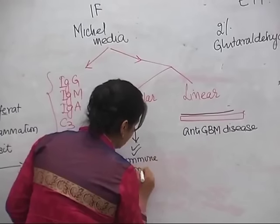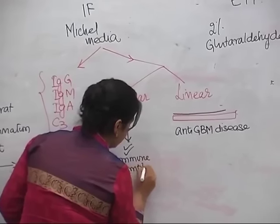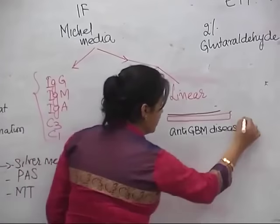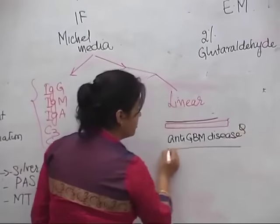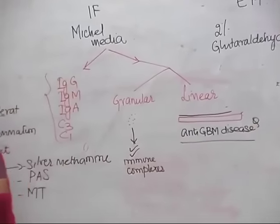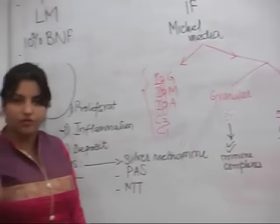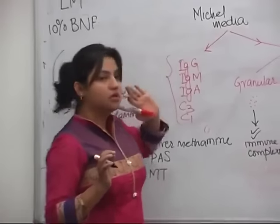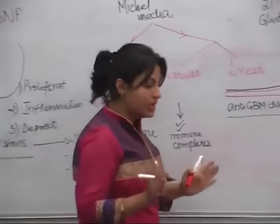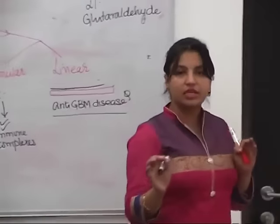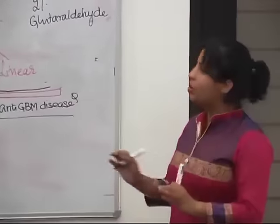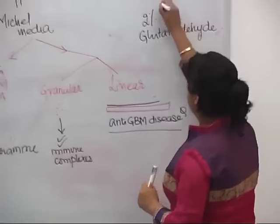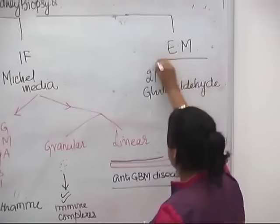Immune complex mediated diseases will show you a granular pattern, and anti-GBM disease will show you a linear pattern on immunofluorescence. Without understanding the basics of what we are going to see in kidney biology, we cannot go further.